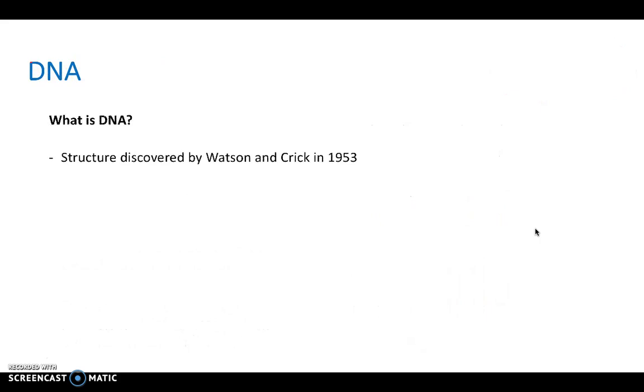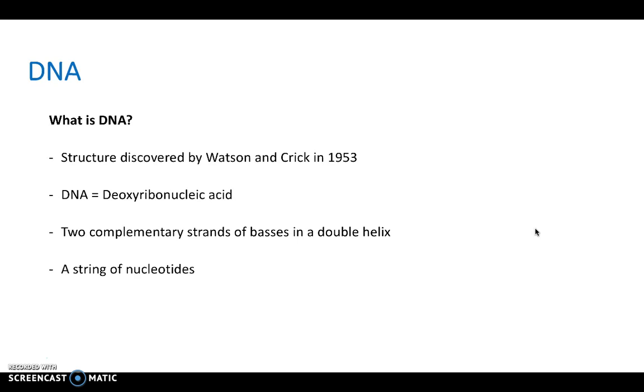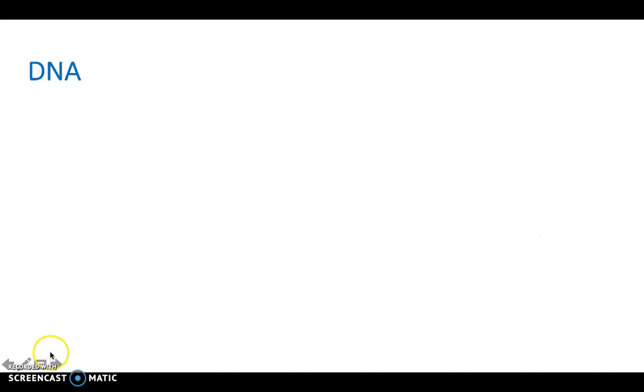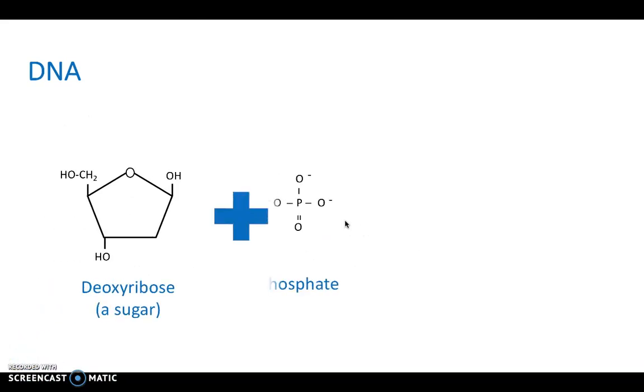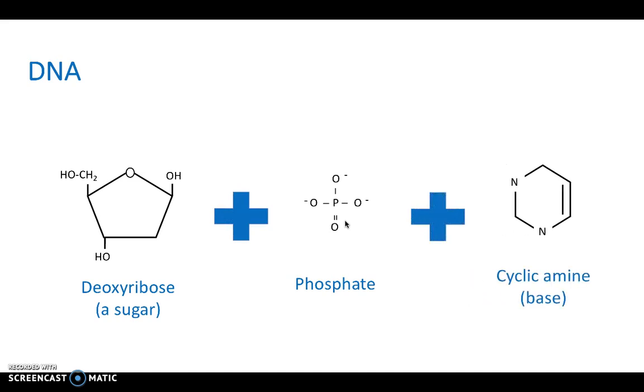So DNA. The structure was discovered by Watson and Crick in 1953. And it's short for deoxyribonucleic acid. There are two complementary strands of bases in a double helix and a string of nucleotides attached to a sugar-phosphate backbone. And there are four main bases, and they're either pyrimidines or purines. Just to see that in diagrammatic form, we have a deoxyribose, which is the sugar, added on to phosphates and cyclic amines, which is your base.